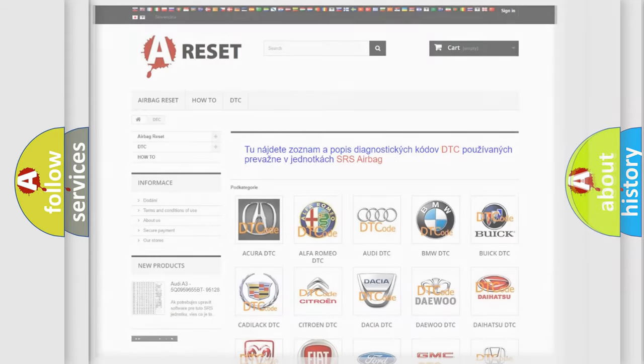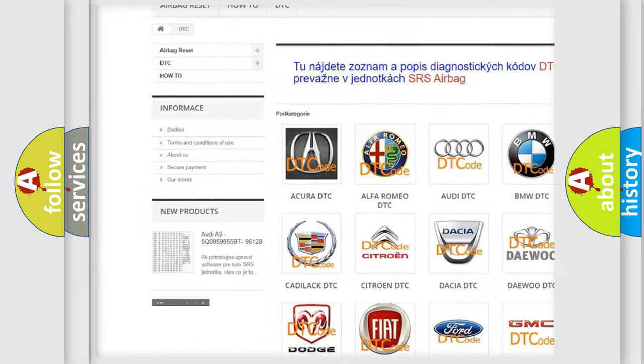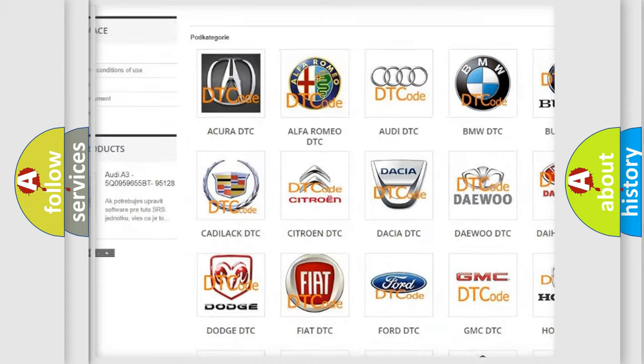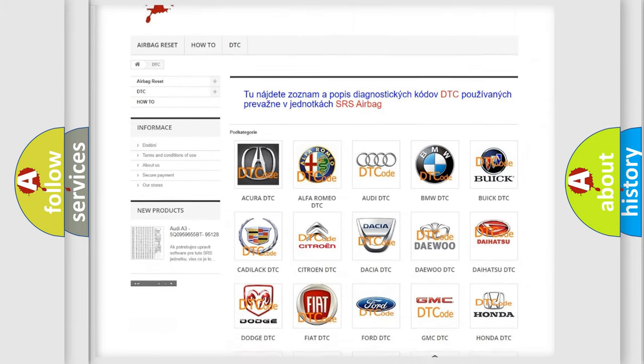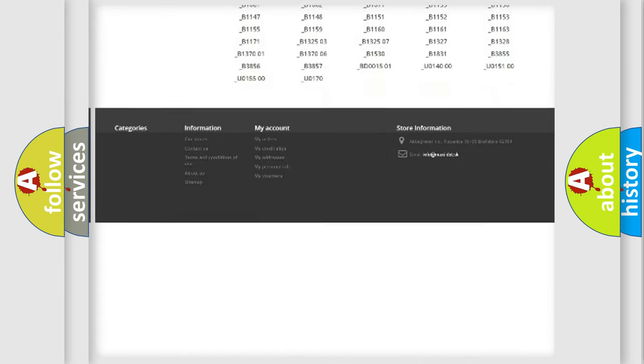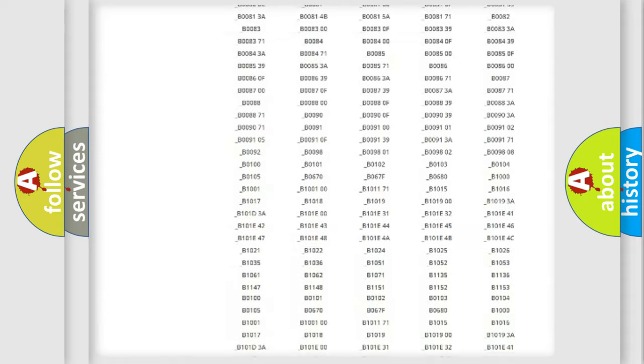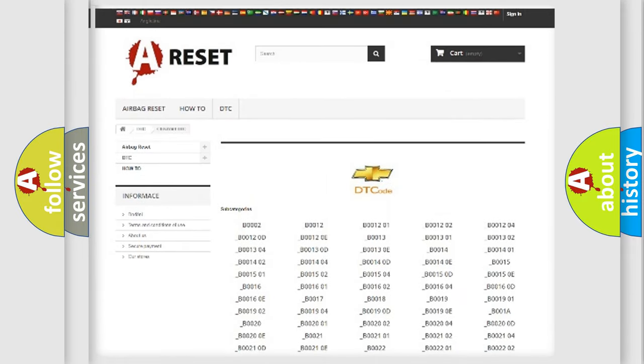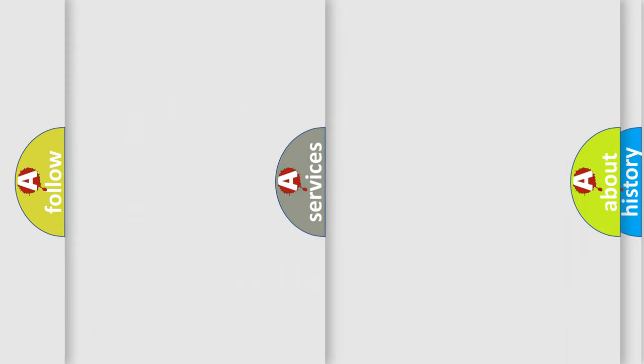Our website airbagreset.sk produces useful videos for you. You do not have to go through the OBD2 protocol anymore to know how to troubleshoot any car breakdown. You will find all the diagnostic codes that can be diagnosed in Chevrolet vehicles, and many other useful things.